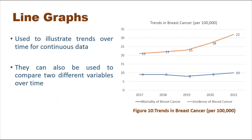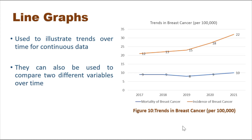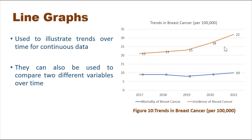Line graphs are used to illustrate trends over time for continuous data. They can also compare two different variables over a period of time. Figure ten shows breast cancer trends per hundred thousand — a dummy graph from 2017 to 2021 — comparing mortality and incidence of breast cancer. We can see that over the period of time there is a major increase in incidence of breast cancer; from 2017 to 2019 the slope is slight, but after 2019 cases increase very rapidly.